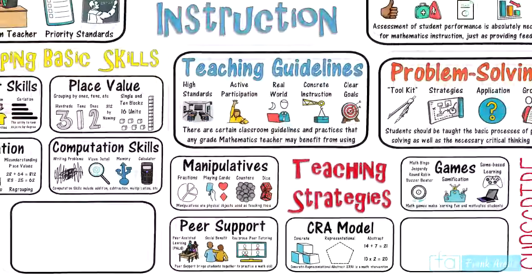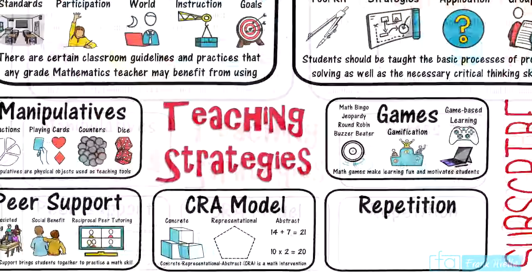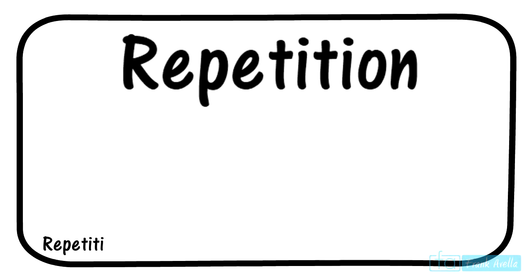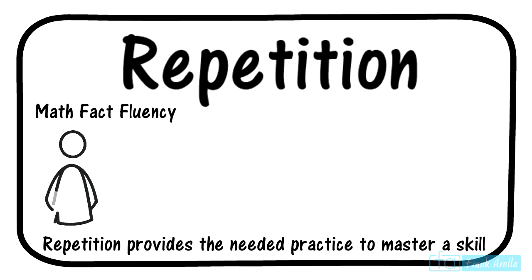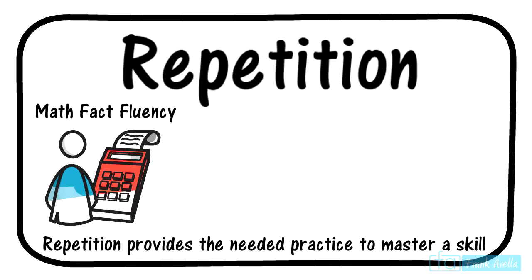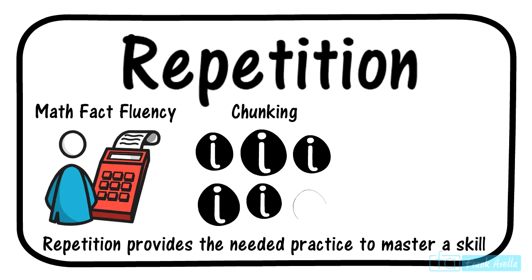Now onto the last of our mathematics teaching strategies: the use of repetition. Repetition provides the needed practice to master a skill — like anything in life, practice makes perfect. Practice is needed for developing math fluency, which is the ability to recall facts and answers automatically without having to think about it. When using repetition to teach mathematics, educators are advised to chunk information for their students. Chunking is an active learning strategy where information is grouped into small and meaningful chunks, making it easier to recall.